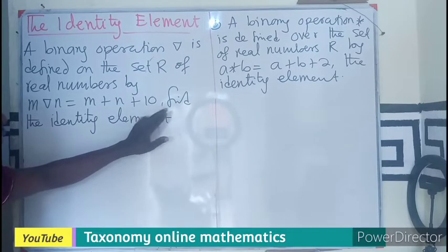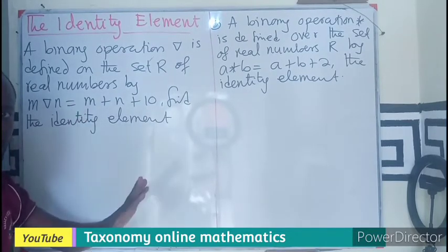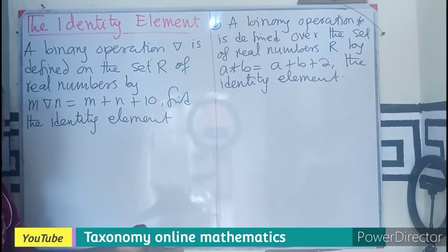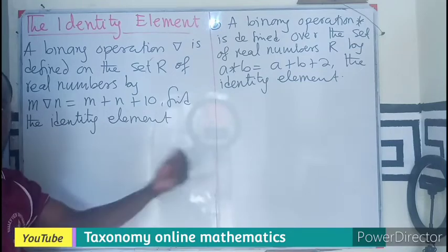So what are we doing? We have to find the identity element. So there are three steps. First, use the operation. Second, let E be the identity element. And third, solve for your E.